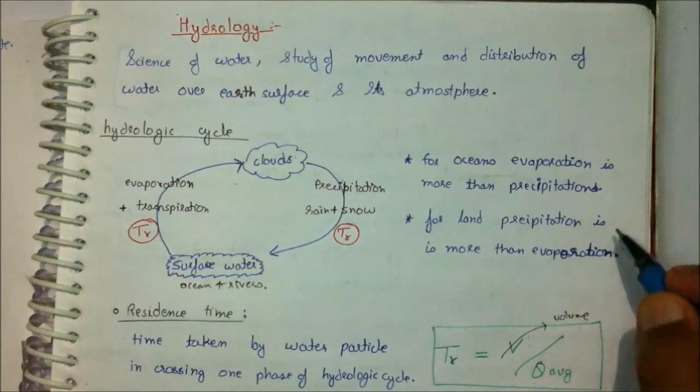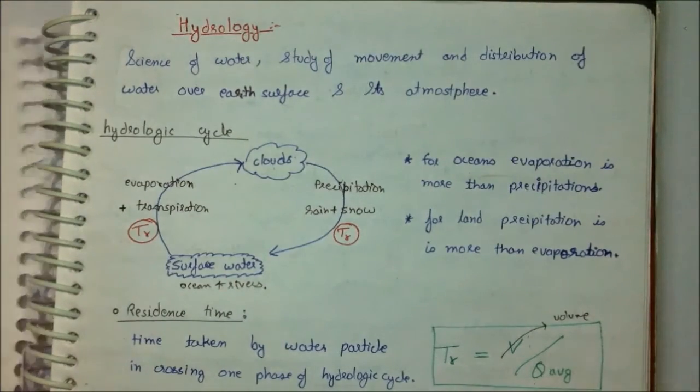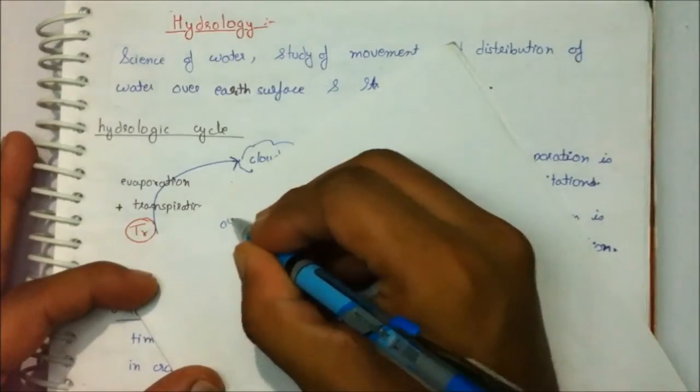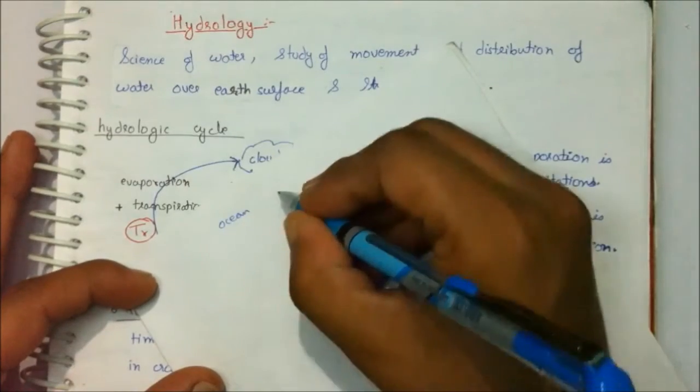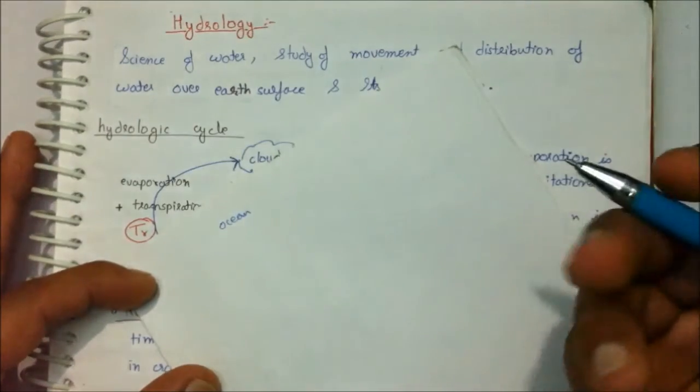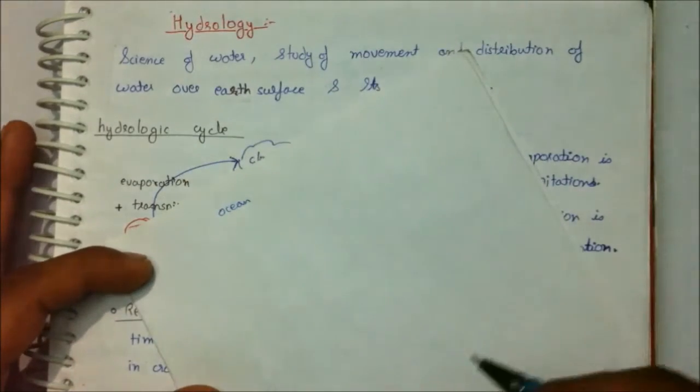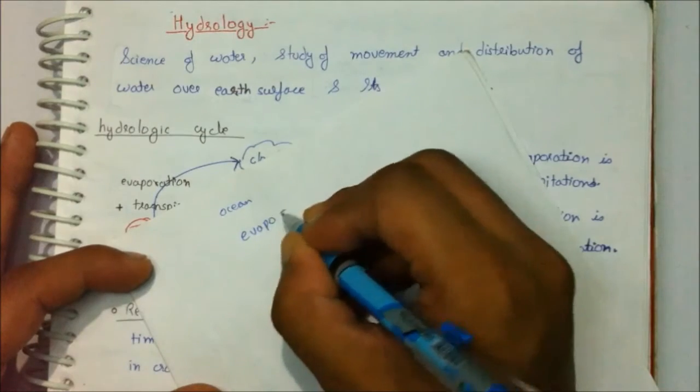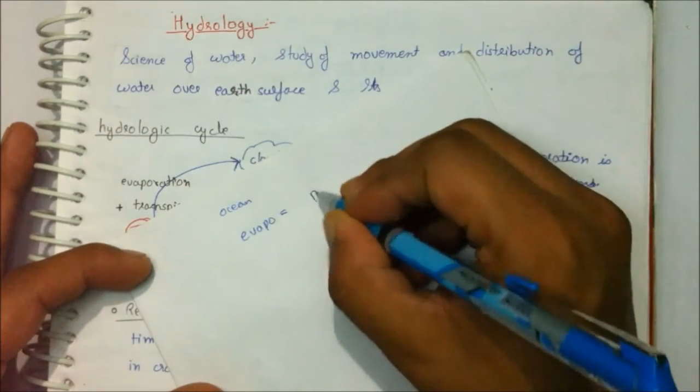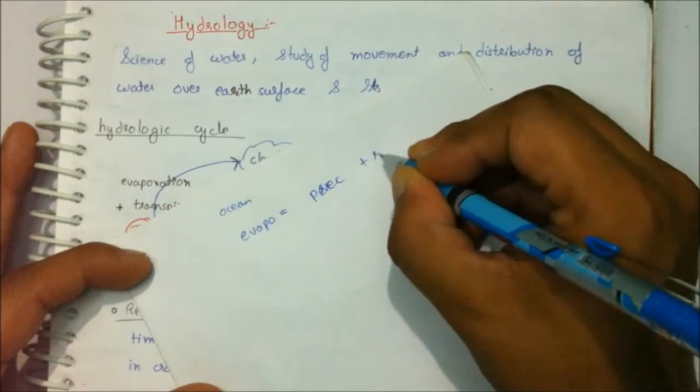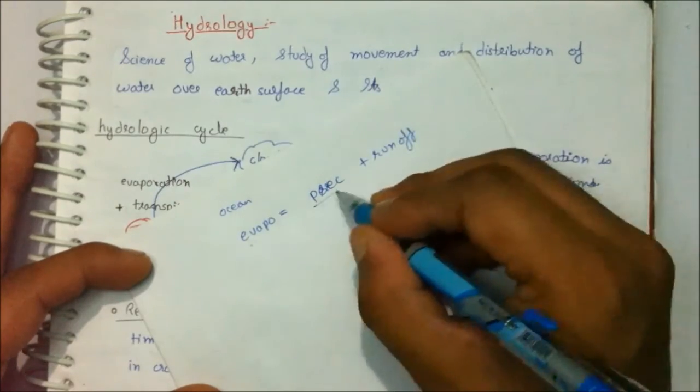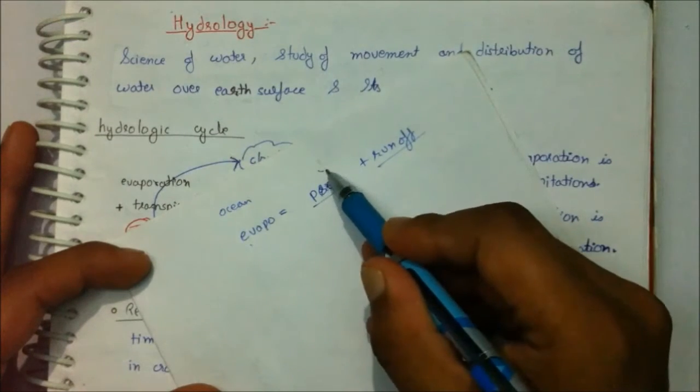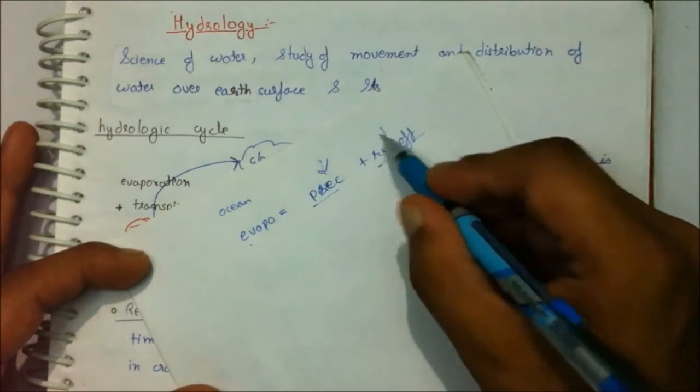For oceans, evaporation is more than precipitation, and for land, precipitation is more than evaporation. To prove these two statements, I have a little theory. In oceans, the amount of water going out is equal to the amount of water going in. So the amount of going water is evaporation, which should be equal to the amount of water coming in through precipitation and runoff. So evaporation is always equal to precipitation plus runoff.